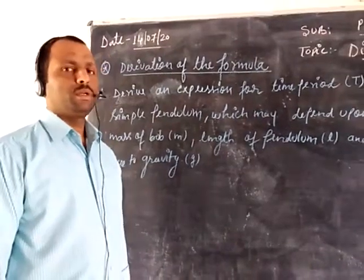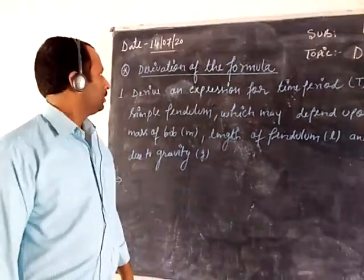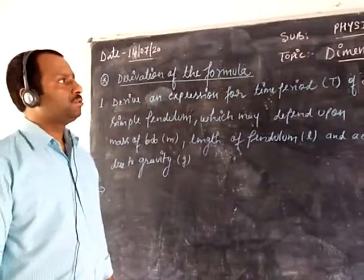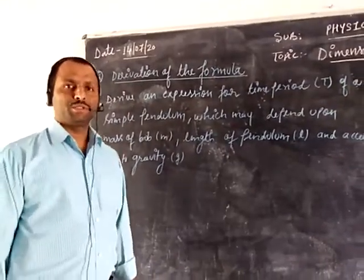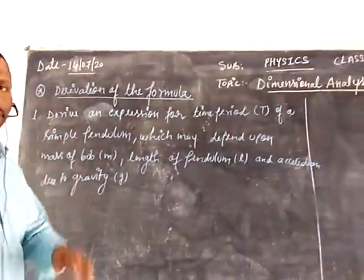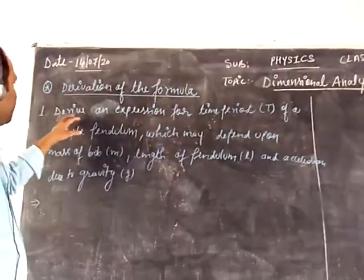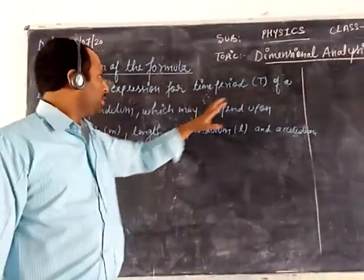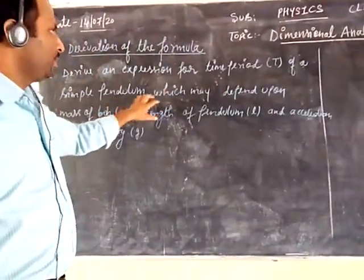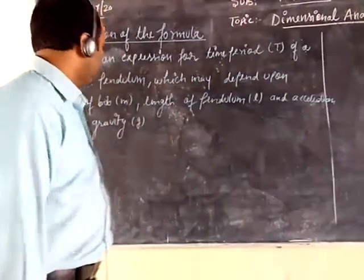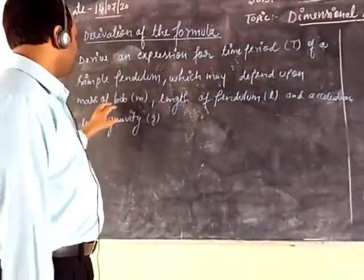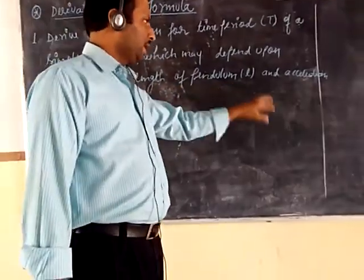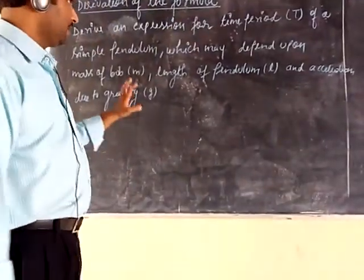Now, we will derive the formula using the method of dimensional analysis. Let us see the question here first. Derive an expression for the time period of a simple pendulum which may depend upon mass of the ball, length of the pendulum, and acceleration due to gravity.